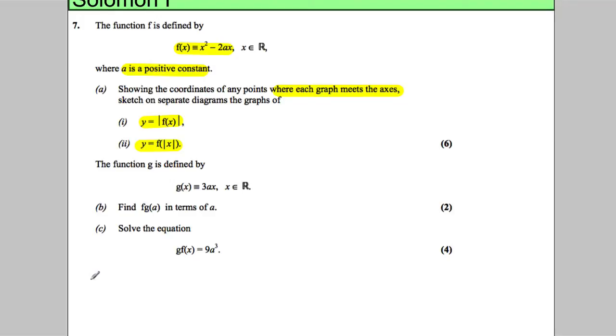The original graph is y = x² - 2ax. Now if x = 0, then y = 0, and similarly if you're solving y = 0...